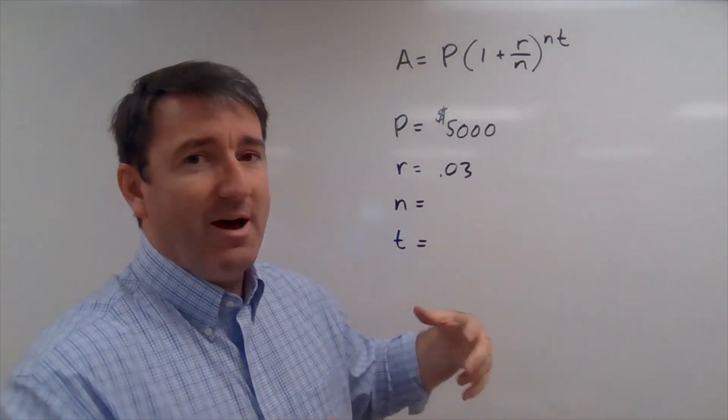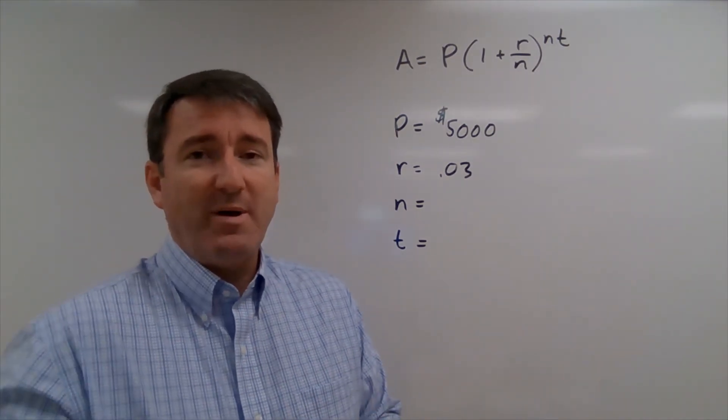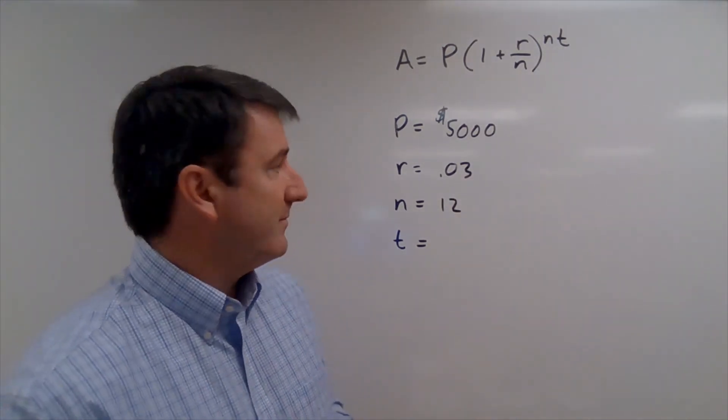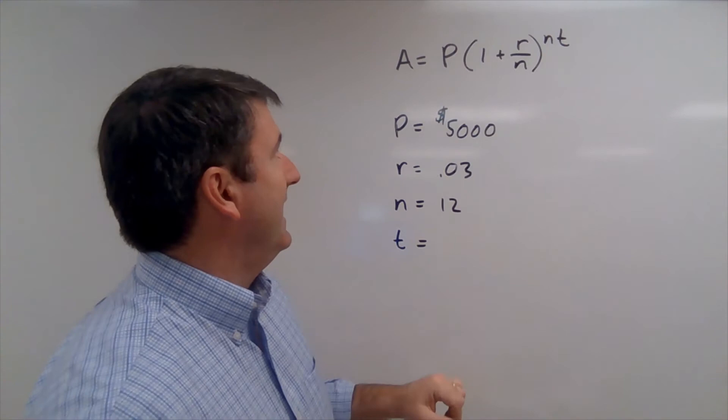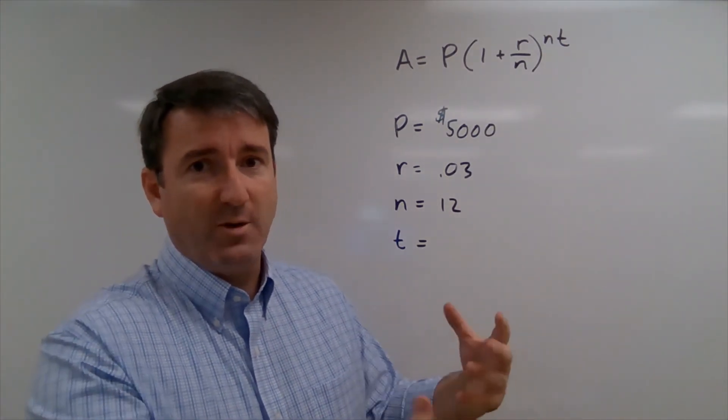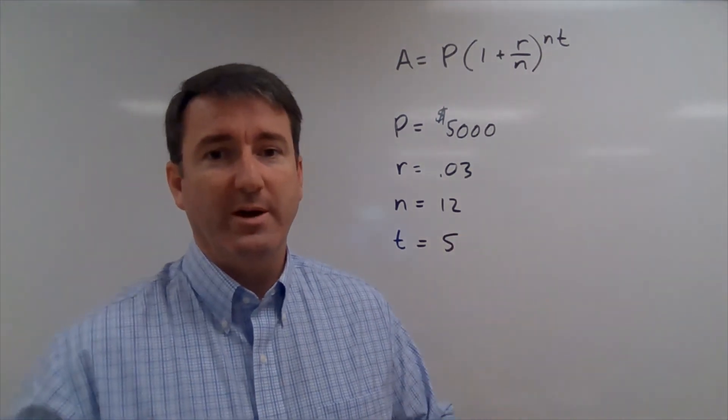N is the number of times per year that interest is compounded. We're told that it's compounded monthly, so that's going to be 12 times per year. And T is the number of years that this investment is going to be growing. So we're told that it's after five years is what we want to know.